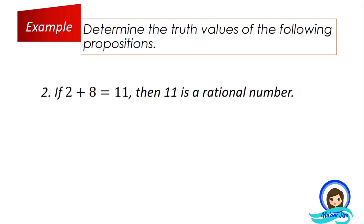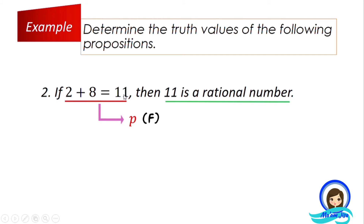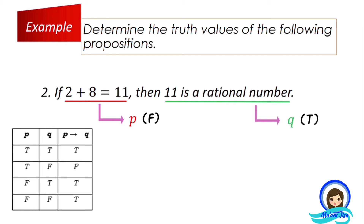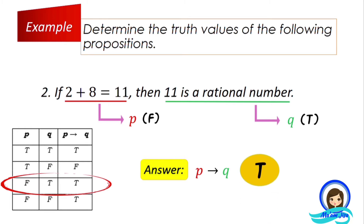Let's have another example: If two plus eight equals eleven, then eleven is a rational number. Our first proposition P is: two plus eight equals eleven. The consequent: eleven is a rational number. The truth value of P is false because two plus eight equals ten, not eleven. But eleven is a rational number is true. Since the antecedent is false and the consequent is true, this conditional statement is still true.